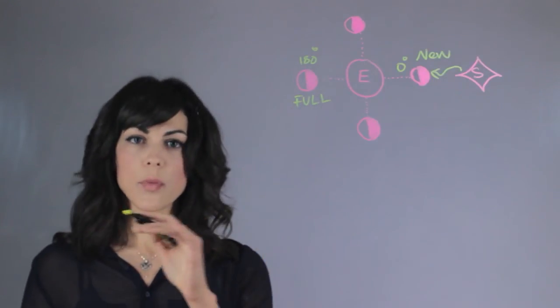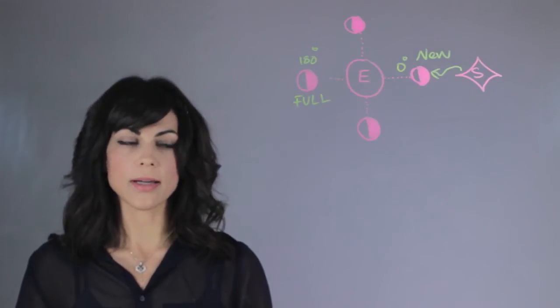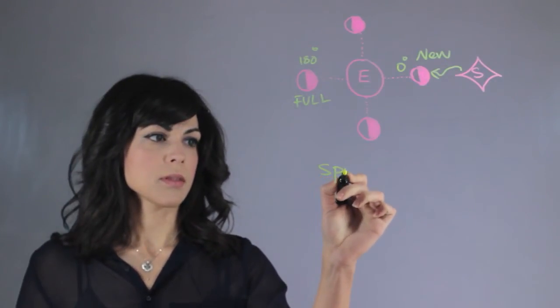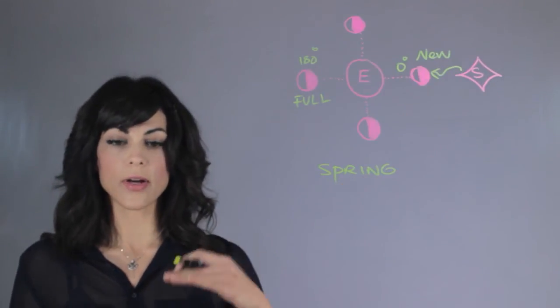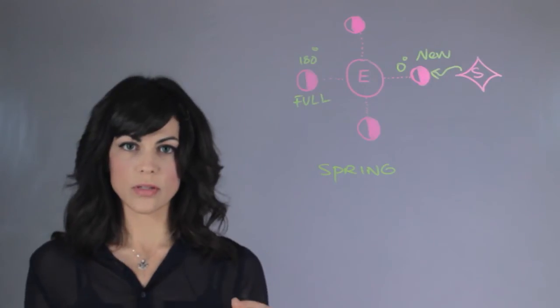So when you have both of them in line, you have something called the spring tides. And with spring tides, you have very high tides and very low tides. So it's both of the extremes.